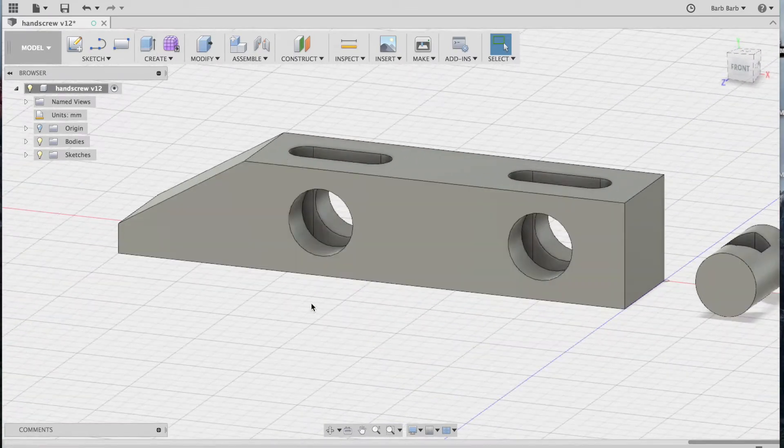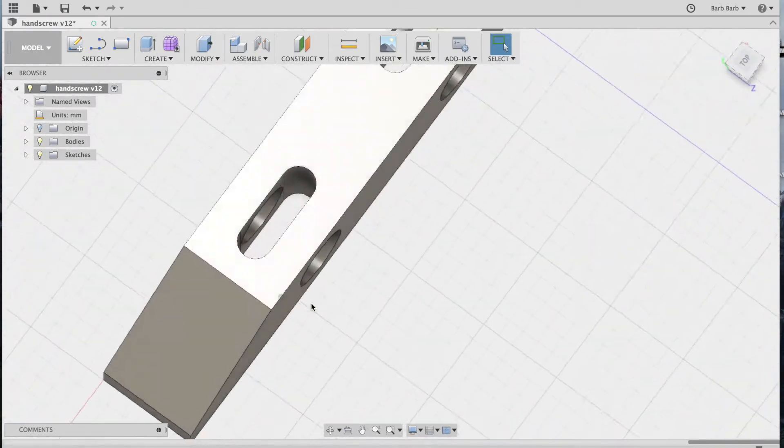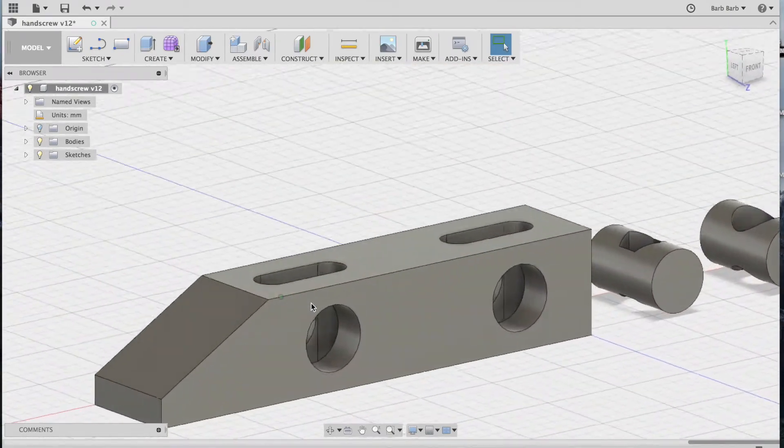I modeled the jaws, barrel nuts, and handles in Fusion 360 and printed them out on a Keto and a Monoprice Select Mini.